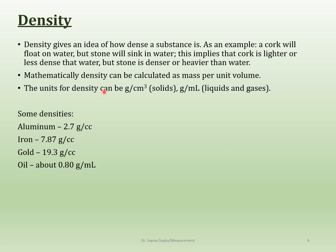Density is mass over volume. For solids, volume is measured in cm³ — also written as cc — since it's length times length times length. For liquids, volume is measured in liquid units like liters or milliliters. So the unit depends on the state of the substance.